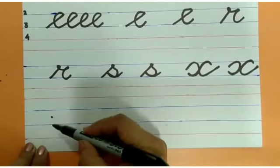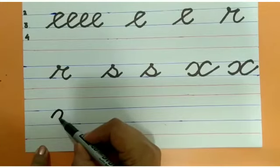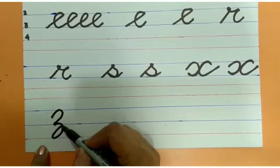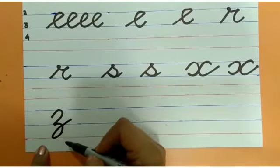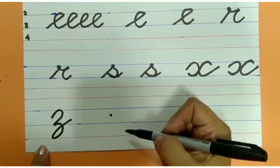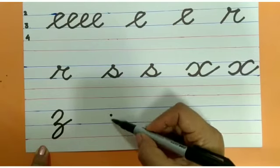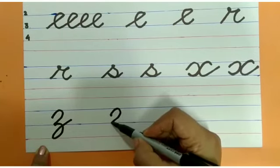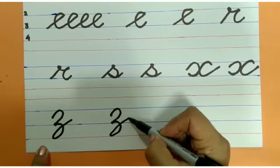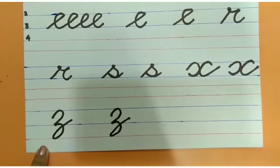For letter Z, in the middle of these two blue lines we will put a dot. And first we will make a loop. Then another loop in the bottom two lines and make a tail. That is how we make Z. Start in the middle of these two lines. Make a curve. Another curve. And go back to make a tail. That is how we write letter Z.